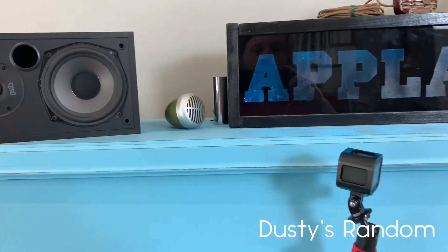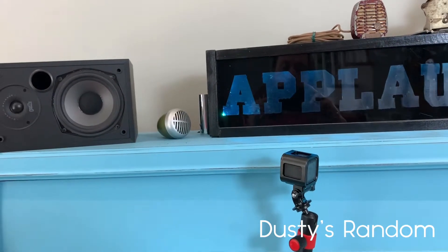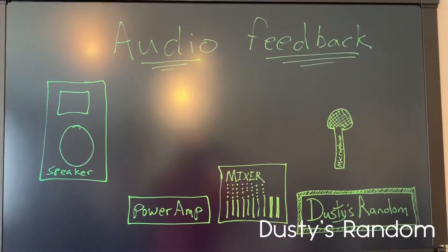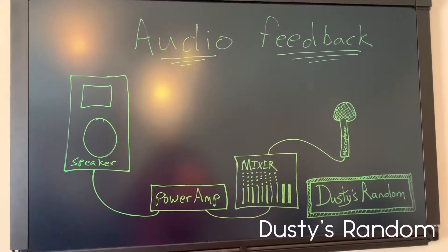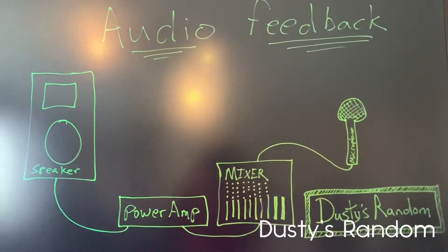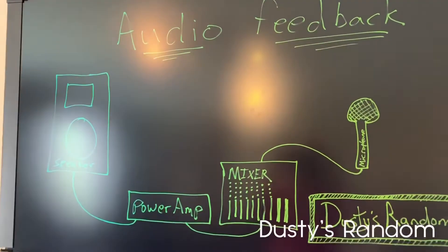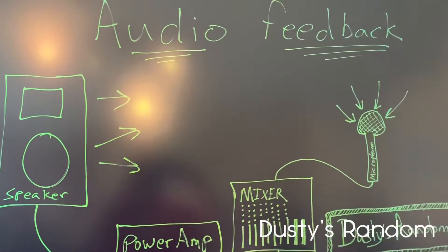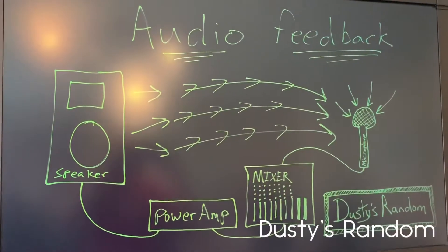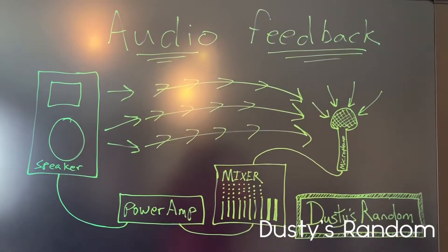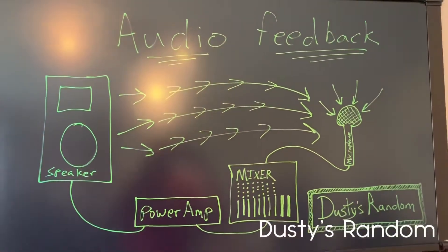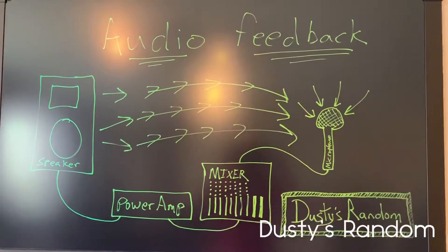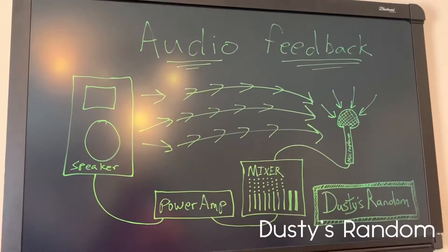First, let's talk about audio feedback. On the blackboard, I've written out the diagram of a PA system. It has a microphone on the right, a mixer, a power amp, and a speaker. The way audio feedback happens is the microphone picks up sounds and the speaker produces sounds. When the microphone gets too close to the speaker, or the speaker system is too loud, it starts a rotation — a circle where the speaker sound comes back into the microphone. That produces audio feedback, which can be high pitch or low pitch, and it can damage the speakers.